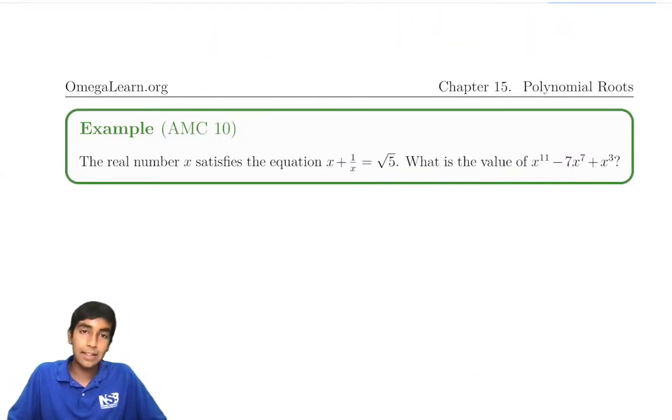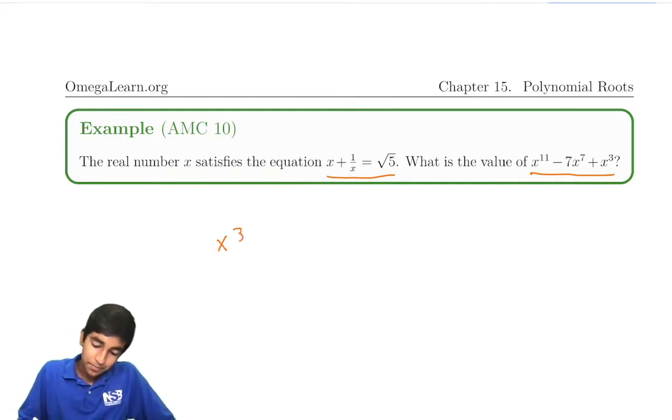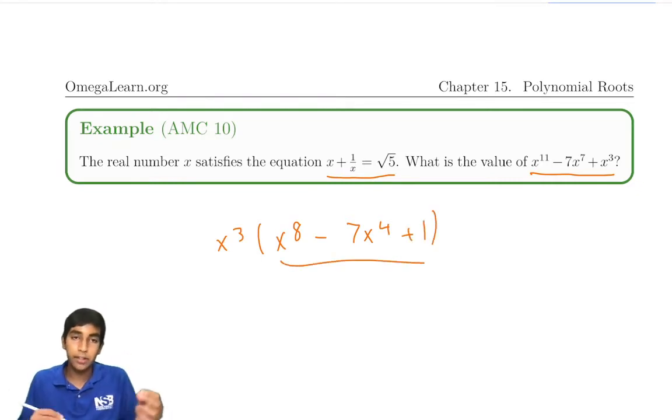The real number x satisfies the equation x + 1/x = √5. We're asked to find x¹¹ - 7x⁷ + x³. The trick to solving these types of problems is: first of all, is this symmetric? The answer is actually no, because the x¹¹ term is not equal to the x⁰ term, but it is almost a symmetric polynomial. We can just factor out x³, because then it will be x⁸ - 7x⁴ + 1, and this is a symmetric polynomial.